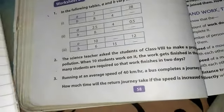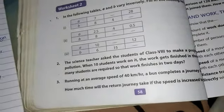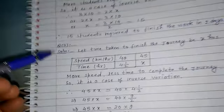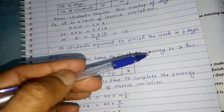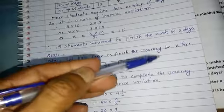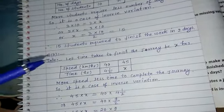So in the first step, we assume x. Let the time taken be x. Like this, let time taken to finish the journey be x hours. This is the return journey, x hours.